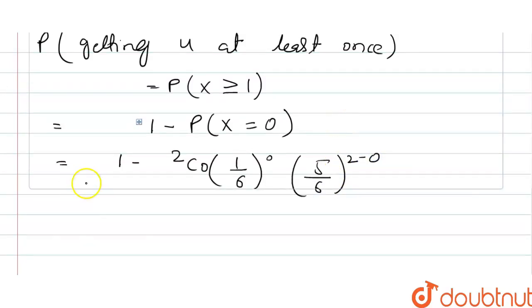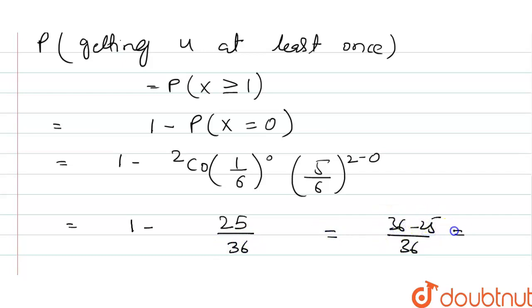Now, the value of this term will be 25 upon 36. We got 36 minus 25, we got 11 by 36.